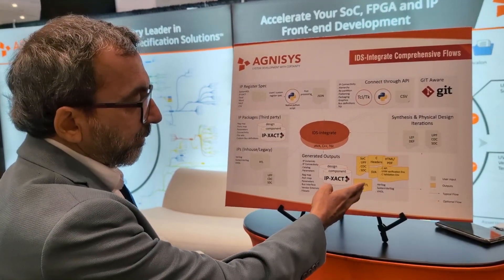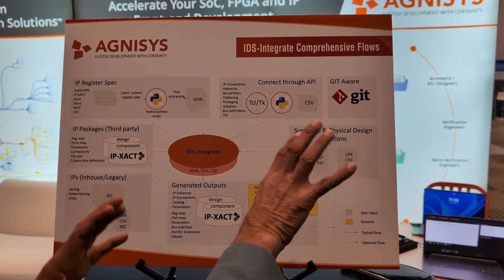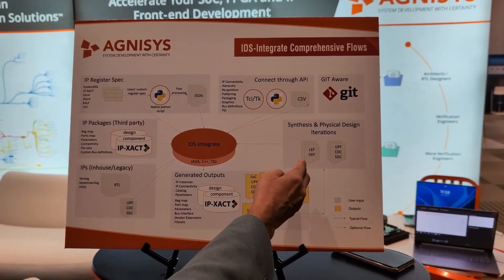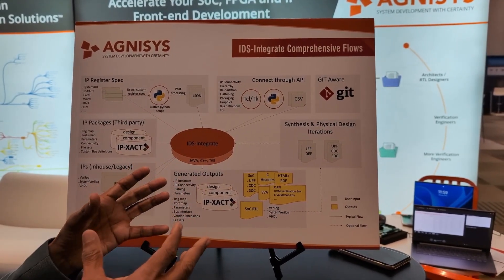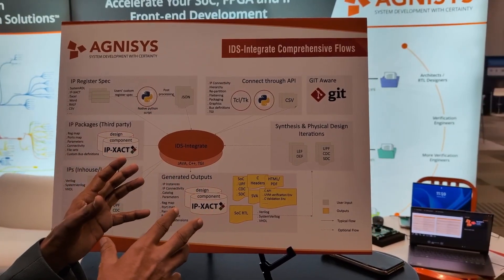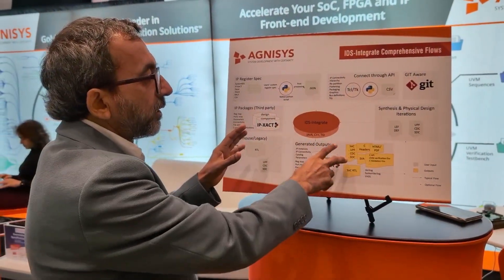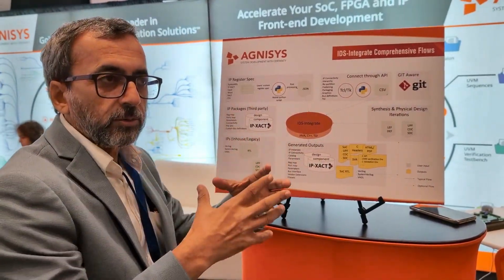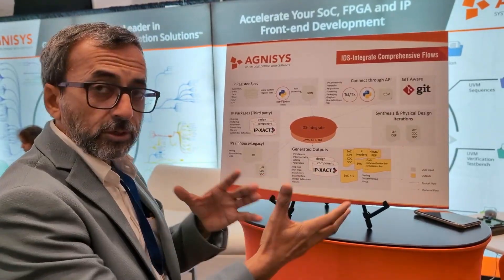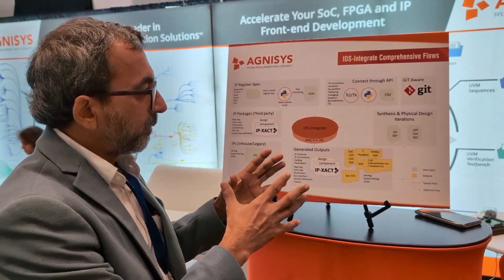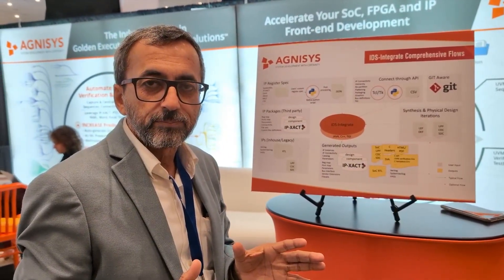Then you can take the RTL to the back-end implementation tools where you can place and route. You can bring that information through LEF/DEF files back into IDS Integrate, where it will repartition and align your front-end design with the back-end. All of this is Git aware — the tool knows about the hierarchy and your version control system. It's a tool that will help you speed up your SOC design process. Thank you.